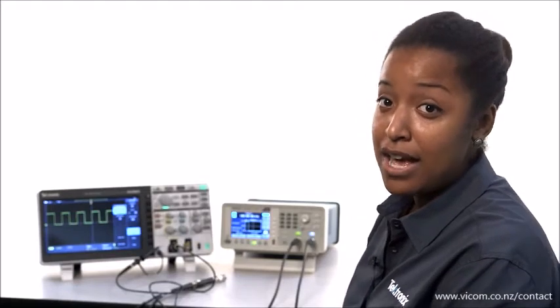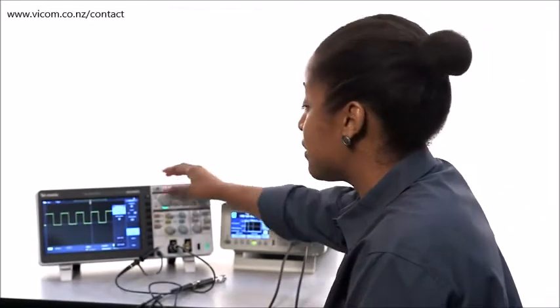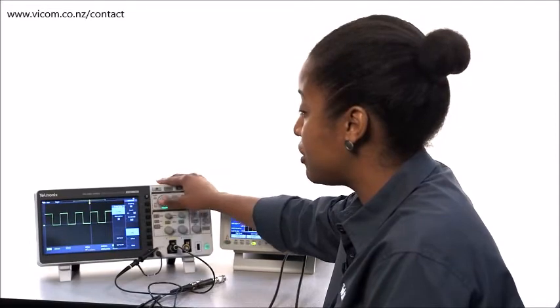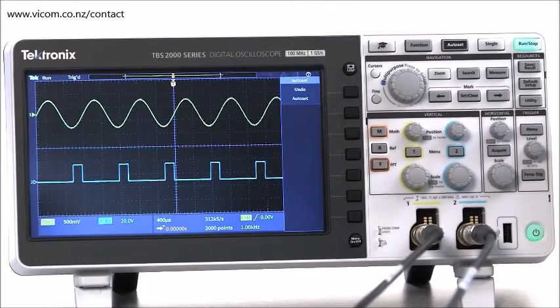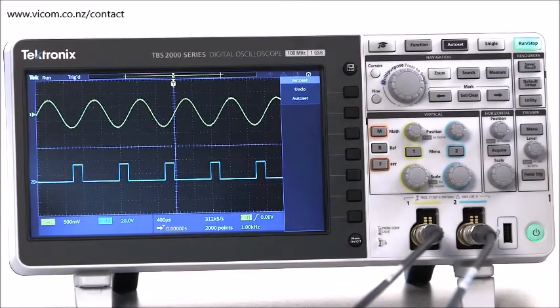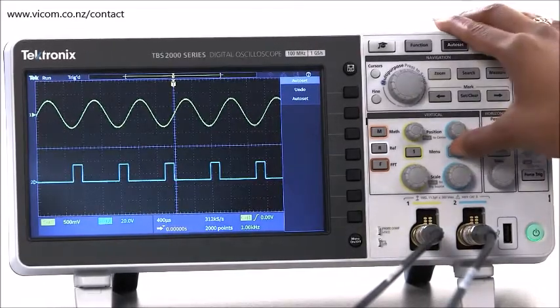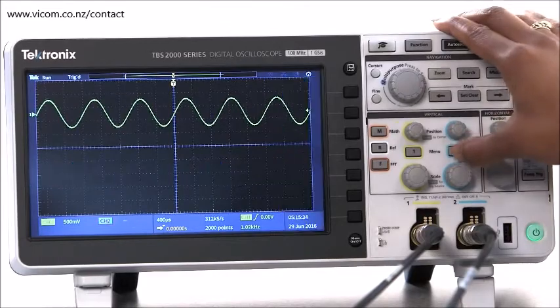For the rest of the video, I'm going to be using a function generator and a couple of cables. So I'm going to leave the attenuation at 1, but I'm going to switch the probe type back to voltage. Now that the probes are taken care of, I'll move on to the vertical controls. We'll just keep it to one waveform for now so you can see this a bit more clearly.